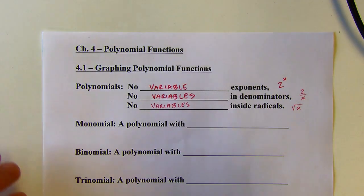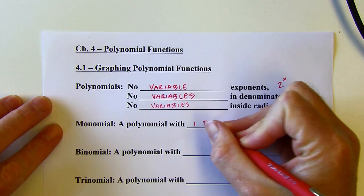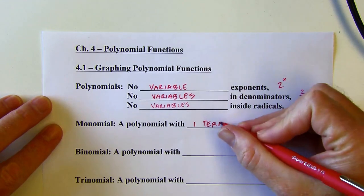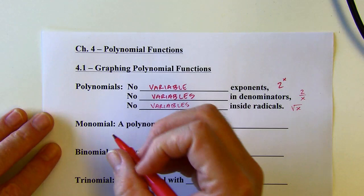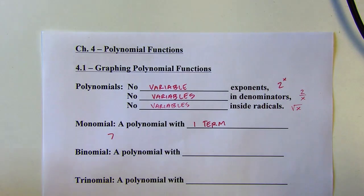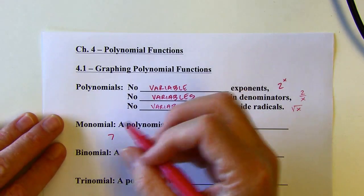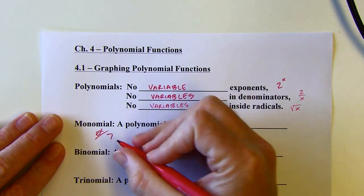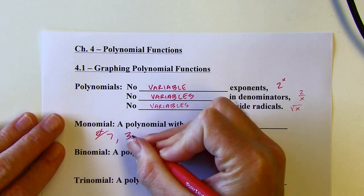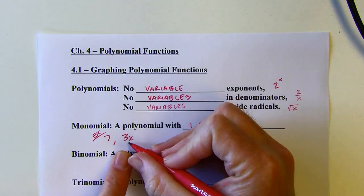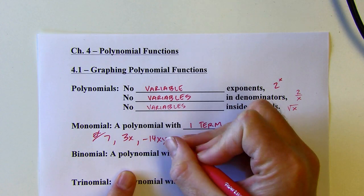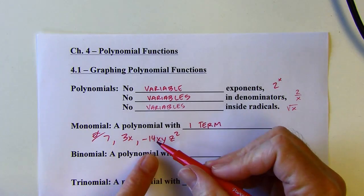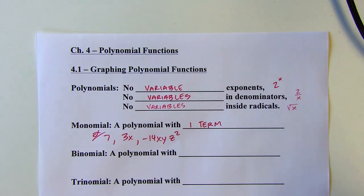A monomial is a polynomial with one term — a little cluster of numbers and sometimes variables as well. So some examples: 7 is a monomial; it's just a number. Or 3x — that is a monomial, it's just one term. Or negative 14xyz squared — that is a monomial, it's one cluster.